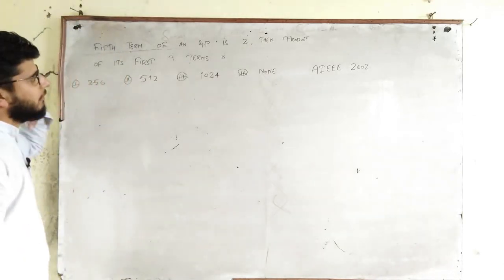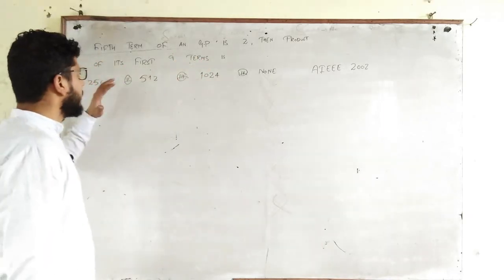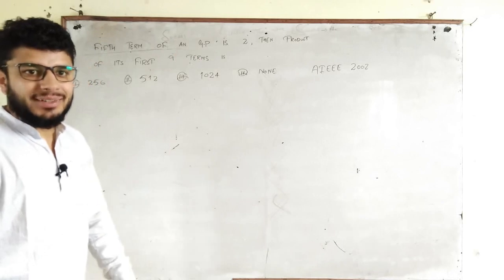Given is the fifth term of GP is 2. You are supposed to find the product of the first nine terms of the GP.